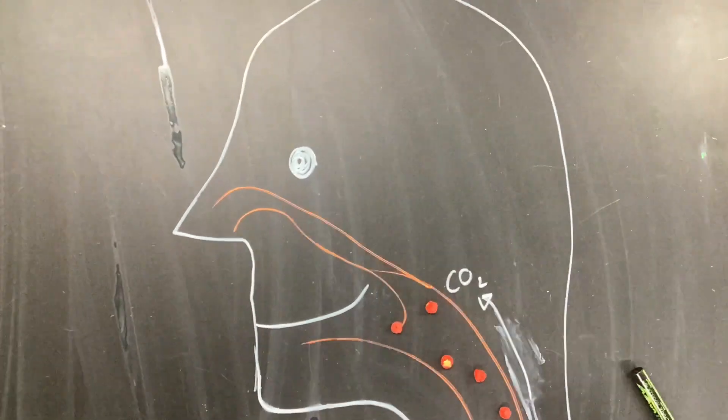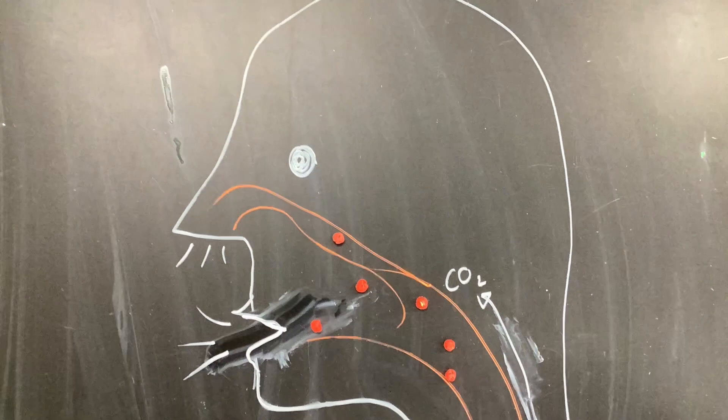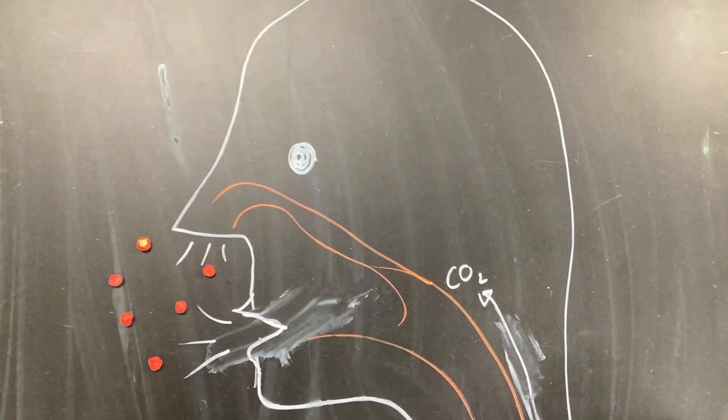The carbon dioxide that is released from the Krebs cycle leaves our body when we exhale and returns to the atmosphere.